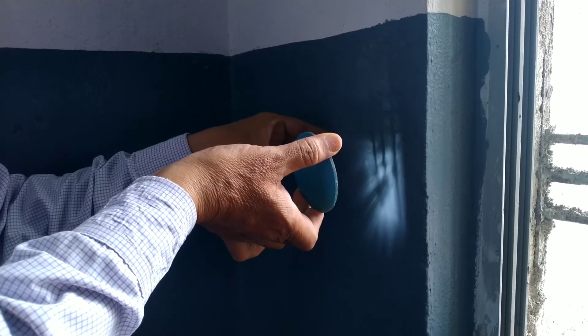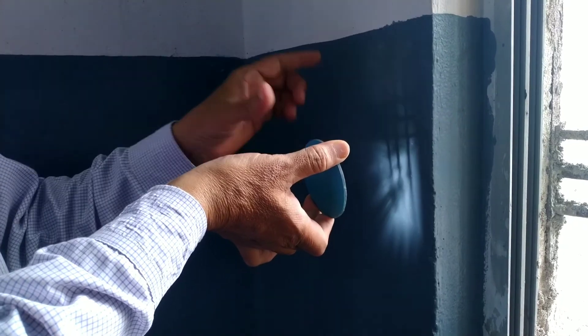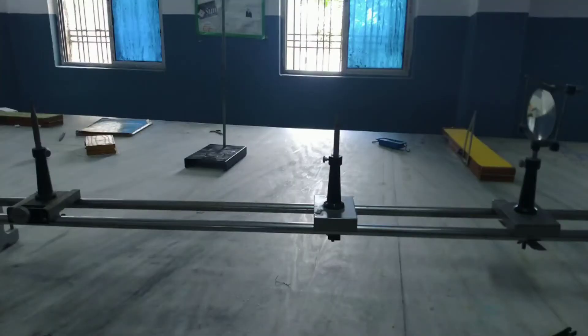This is the image of the practical setup for determination of the focal length of concave mirror between the variation of u and v.